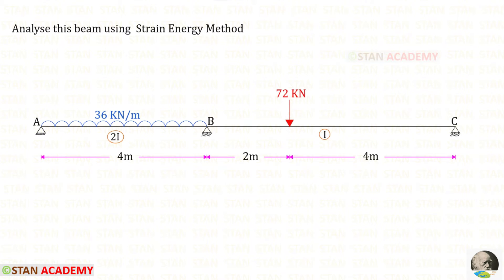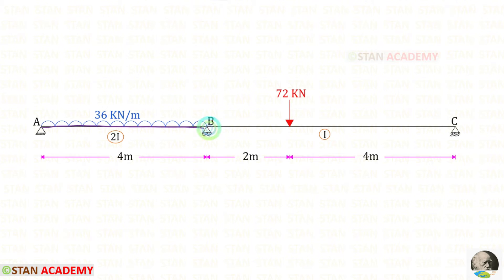Hello everyone, today we are going to analyze this beam using the strain energy method. In this beam there are two spans: span AB and span BC. In span AB there is a uniformly distributed load of 36 kN per meter.